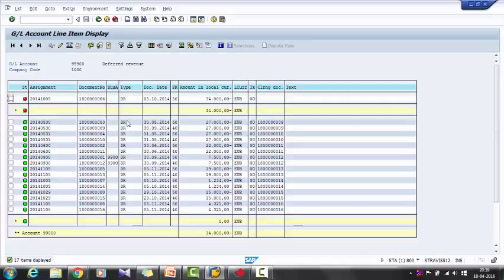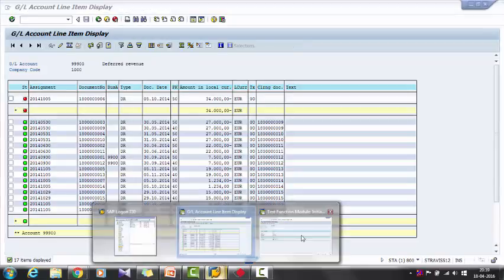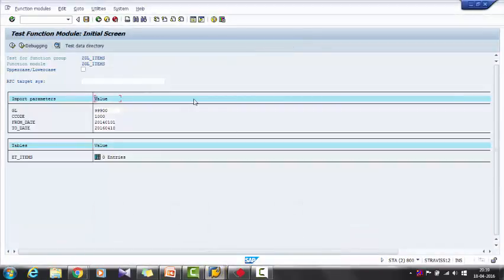As I told you, we are using custom RFC or BAPI. In SAP, we have created a custom RFC. Inside that RFC, we have built the logic to get the GL line items, same as SAP standard transaction.